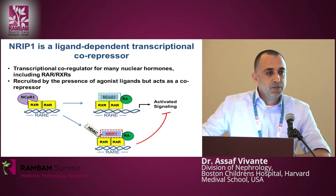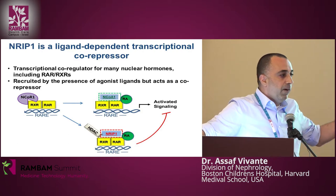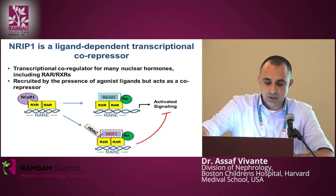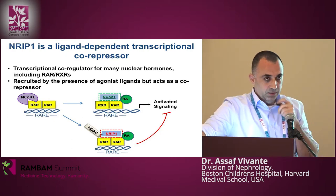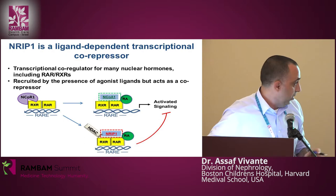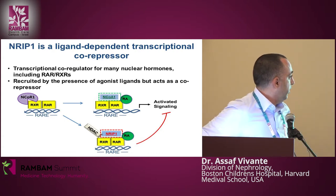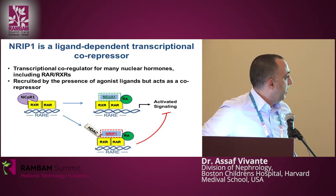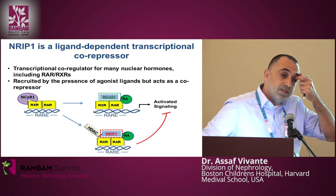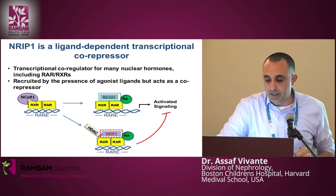There is some prior information in the literature about NRIP1. NRIP1 is a ligand-dependent transcriptional corepressor — a transcription factor involved in most of the CAKUT-causing gene pathways. It is specifically a transcriptional coregulator for many nuclear hormone receptors, including retinoic acid receptors, and is recruited by the presence of an agonist ligand but acts as a corepressor. The retinoic acid X receptor and retinoic acid receptors lie on retinoic acid response elements. In the presence of retinoic acid, there is recruitment of coactivators which trigger retinoic acid target gene transcription, and at the same time there is recruitment of NRIP1, which acts as a negative inhibitor of this pathway.